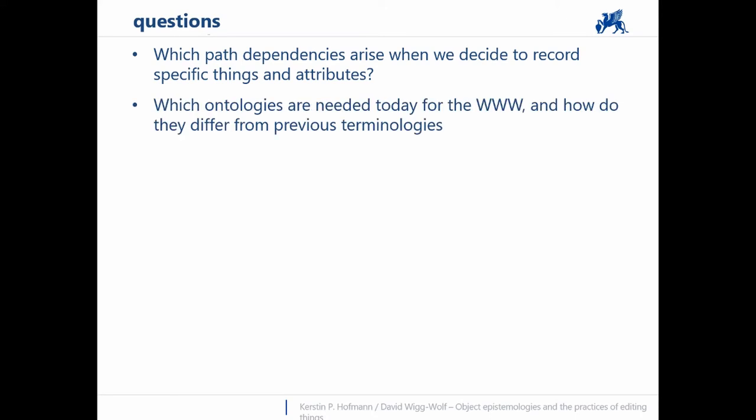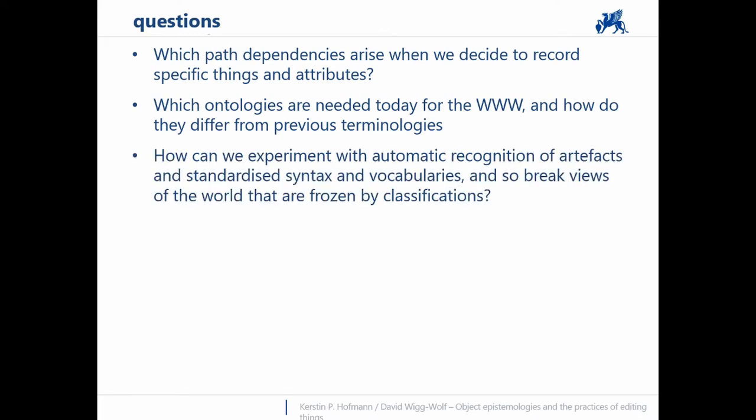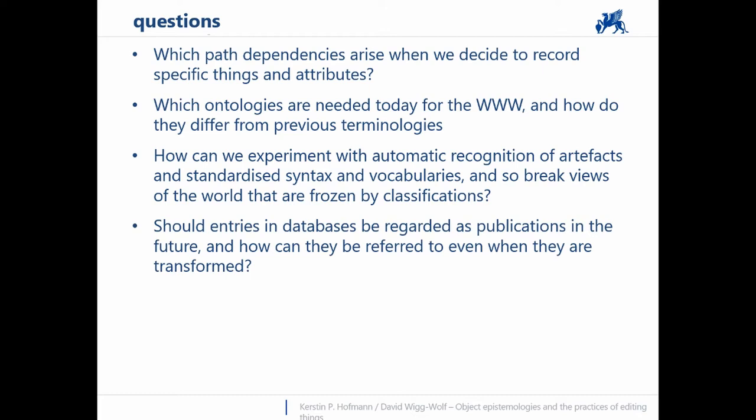Which ontologies are needed in order to link things in the World Wide Web, and how do they differ from previous terminologies or ontologies of philosophers? How can we experiment with automatic recognition of artifacts and standardized syntax and vocabularies, and so break views of the world that are fixed by classifications? Should entries and databases in the future be regarded as publications? And how can we make use of versioning and multi-authorship so that they can be referred to even when they are transformed?